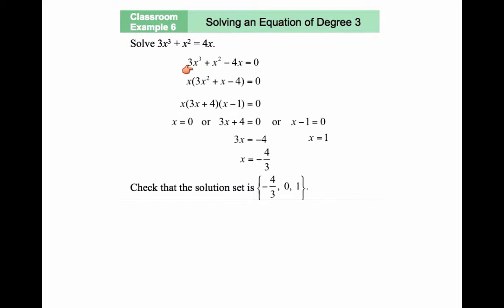You notice that this is a third order equation. However, I can factor the x out. The next step is to factor. The greatest common factor is x. If I factor the x, I would get x times 3x squared plus x minus 4.